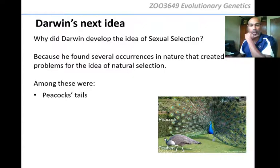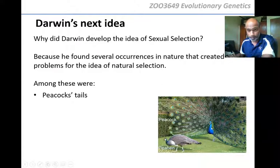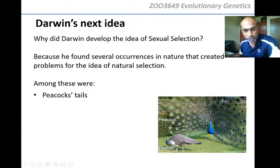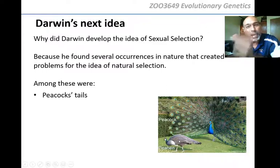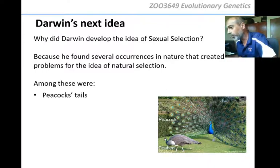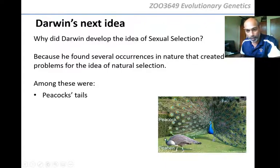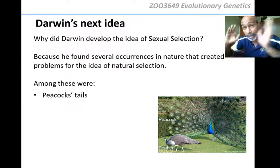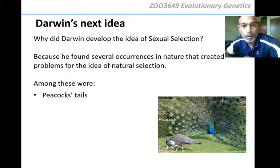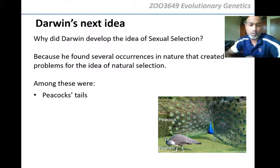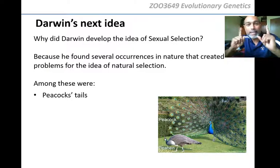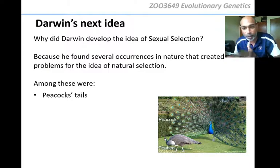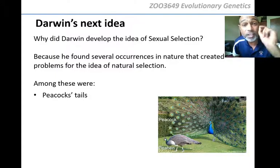Look at this example. The peahen — the female — looks normal. She doesn't have any crazy feathers, so if a predator chases her she can escape. But look at the peacock — the male — with these huge feathers. If a predator like a leopard is chasing that peacock, those feathers are so heavy he could be caught. In other words, that peacock is not perfectly suited to its environment.